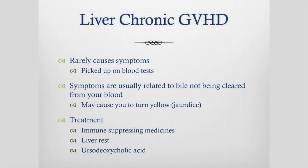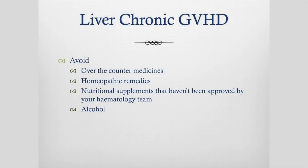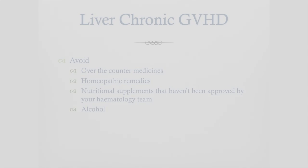Chronic GVHD can also involve the liver. Like with acute liver GVHD, it rarely causes symptoms and is mostly picked up on your blood tests. Symptoms are usually related to bile not being cleared from your blood, which can cause you to turn yellow in severe cases. Immune-suppressing medicines are used to treat it; we try to rest your liver and give ursodeoxycholic acid to try and normalize liver tests. What you can do is avoid over-the-counter medicines, homeopathic medicines, and some nutritional supplements, as some of these can interact with medicines your haematology team is giving you or be toxic to the liver. And of course, avoid alcohol, as it is processed through your liver.